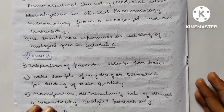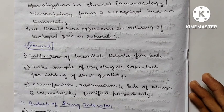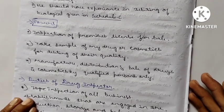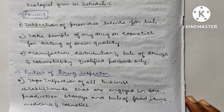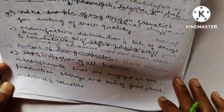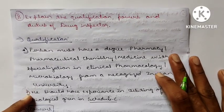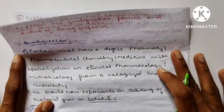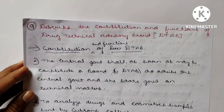The Drug Inspector must also have good experience in testing Schedule C drugs. Powers include inspection of premises and licenses for sale, and taking samples of any drug or cosmetic for testing their quality. He oversees manufacture, distribution, and sale of drugs and cosmetics by qualified persons only. Duties include inspection of all business establishments engaged in production, storage, and sale of medicines and cosmetics — the Drug Inspector invests his authority in quality testing.